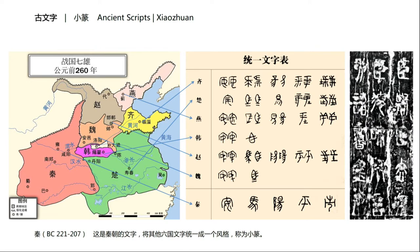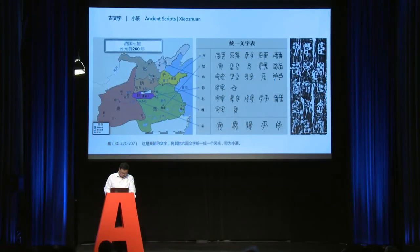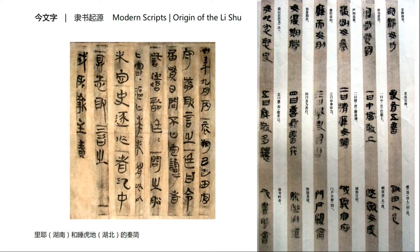The Qin dynasty was the first unified state of imperial China. The Qin dynasty's characters — the writing styles of six earlier states — were merged into one style. And this is the Li Shu from the Qin dynasty. It was found in Hunan and Hubei in China, written on bamboo.